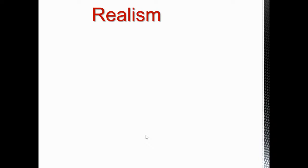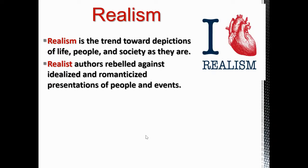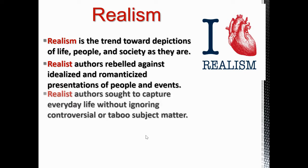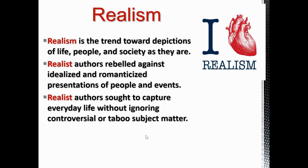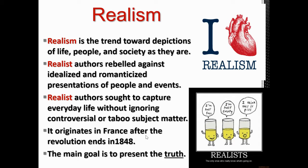Realism is still in place today. It is the trend to depict life, people, and society as they are. Realist authors rebelled against idealistic and romanticized presentations of people and events — they rebelled against romanticism. Realist authors sought to capture everyday life without ignoring controversial or taboo subject matter. It originates in France after the revolution ends in 1848, and its main goal is to present the truth — depicting reality as realistically as possible through fictional characters.